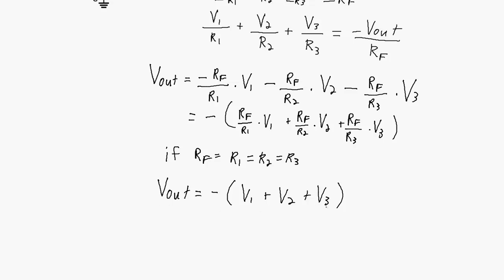So Vout is equal to the sum of the voltages, but just the inverse of the sum, or the negative of the sum of the voltages. And if we're dealing with sinusoidal waves or AC signals, then all that means is Vout is 180 degrees out of phase with the sum of V1, V2, and V3. So hopefully you learned a little bit about summing amplifier circuits, and I'll see you in the next video.